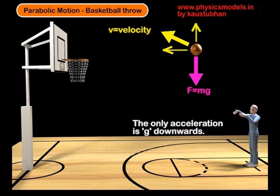Now, after the ball is released, the player is no longer applying any force. The only force on the ball is its weight towards the center of the earth — that's F equals mg. That means the only acceleration on the ball in flight is g downwards. There is no acceleration on the ball in the horizontal direction.